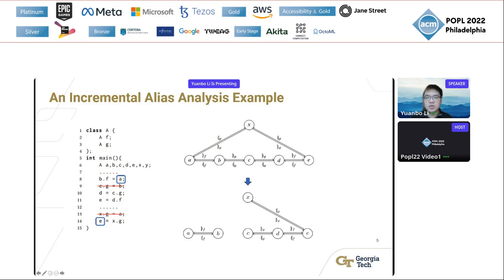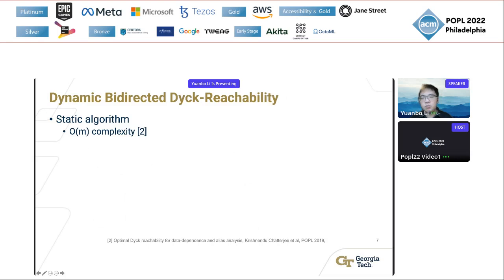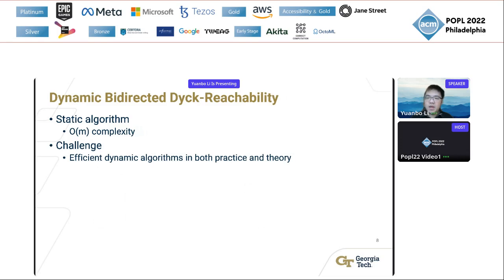The bi-directed Dyck reachability problem has been extensively studied in the literature and different approaches to compute it have been proposed. For a graph with N nodes and M edges, the optimal algorithm has been shown to have O(N) complexity. Since the optimal static algorithm already has linear running time and can be used as a naive approach to recompute Dyck reachability for dynamic edge updates, it is challenging to design a dynamic algorithm that is better than the static algorithm in both theoretical running time and in practice.